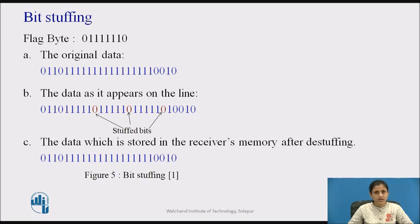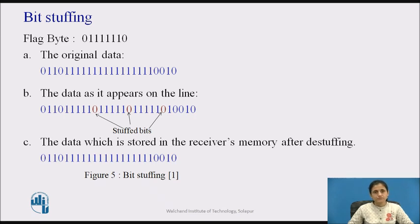The third method, bit stuffing, allows the data frames to contain an arbitrary number of bits. At the start and end of each frame, a flag byte consisting of the special bit pattern 01111110 is inserted. Whenever the sender's data link layer encounters 5 consecutive ones in the data, it automatically stuffs a 0-bit into the outgoing bitstream. When the receiver finds 5 consecutive ones followed by a 0-bit, it automatically destuffs the 0-bit. The boundary between two frames can be determined by locating the flag pattern. Figure 5 gives an example: 5a shows the original data, 5b after bit stuffing, and 5c the result after destuffing.